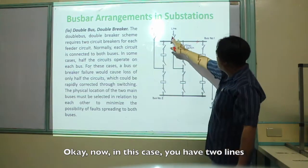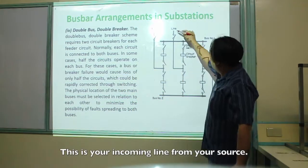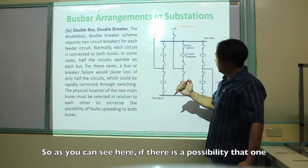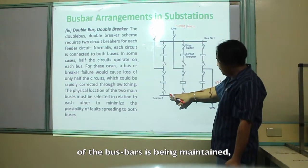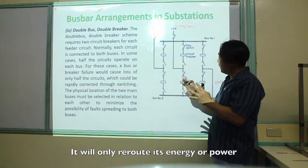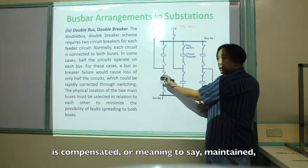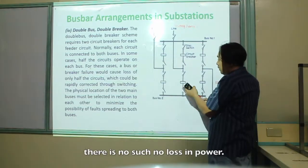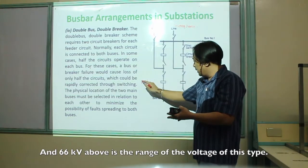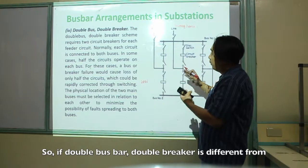In this arrangement, you have two lines and your outgoing line and your incoming line from your source. If there is a possibility that one of the bus bars is being maintained, the power is not cut off — it will only reroute its power to bus number one. Even if one of the breakers is maintained, there is no loss in power. This type is N-2 and operates at 66 kV and above.